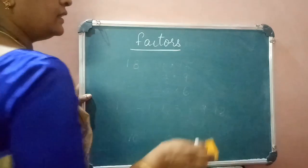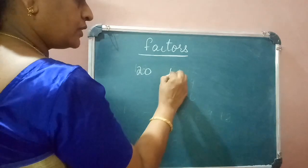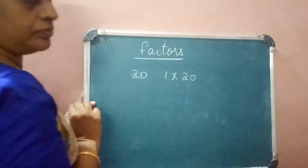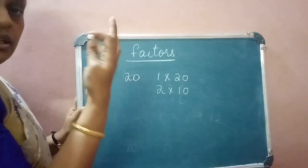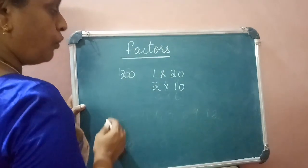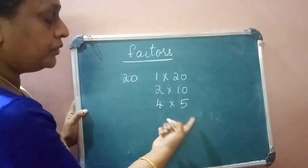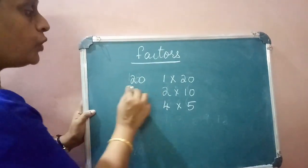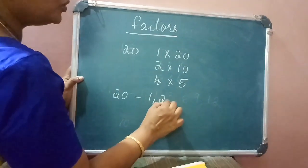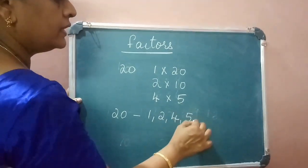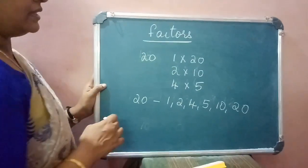Now take another example: 20. 20 can be expressed as 1 × 20, 2 × 10. In the 3 times table, 20 doesn't appear, so we skip 3. Then 4 × 5 = 20. So the factors of 20 are 1, 2, 4, 5, 10, and 20.